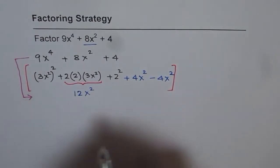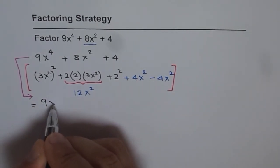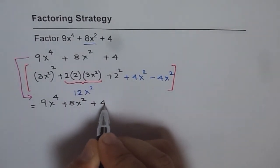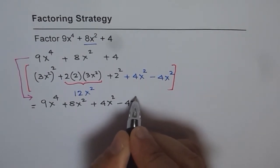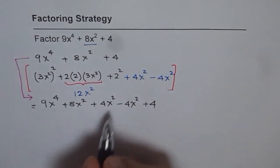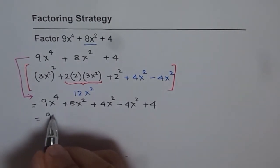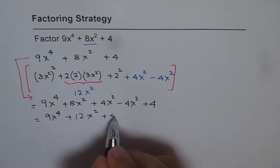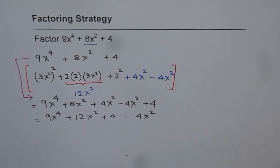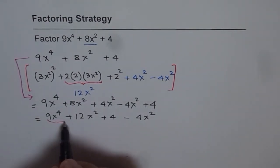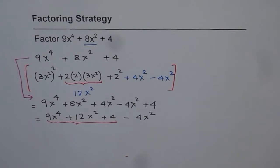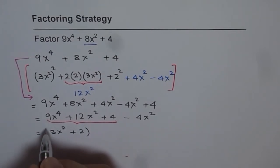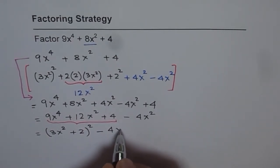So what we will do here is write this as equals to 9x to the power of 4 plus 8x squared plus 4x squared, minus 4x squared plus 4. And now we get 12x squared. Do you see that? So we have 9x to the power of 4 plus 12x squared plus 4 minus 4x squared. Now as you can see, this is a perfect square.